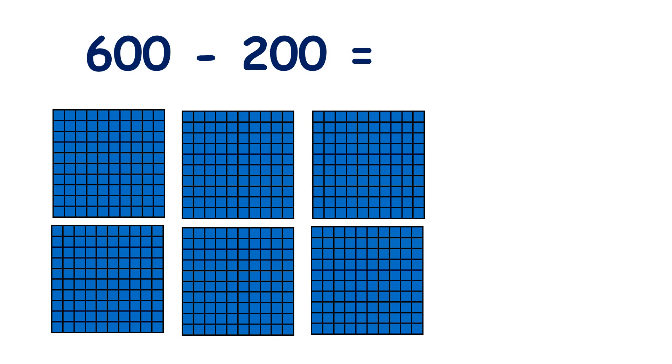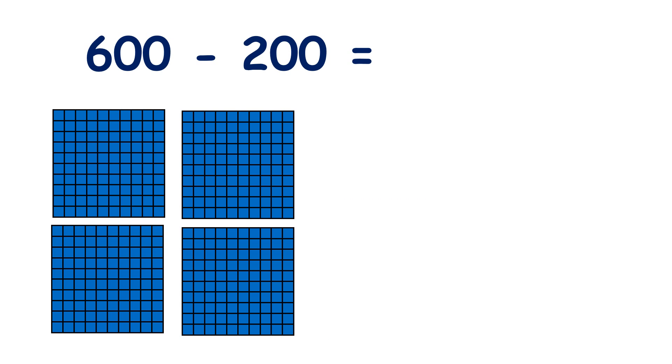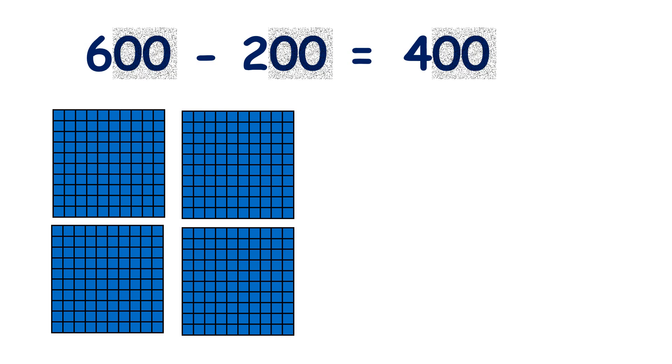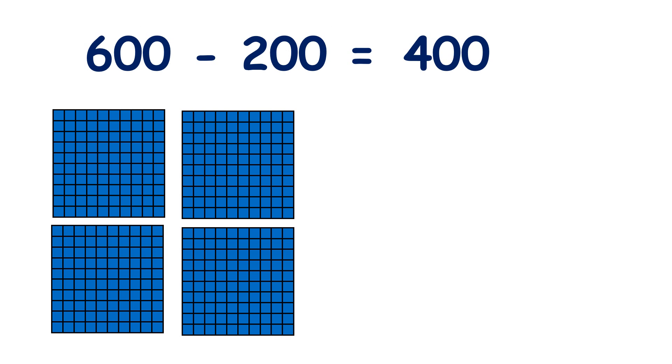So what is 600 minus 200? If we take away 200, that leaves us with 400. And because we know that 6 minus 2 is 4, we know that 600 minus 200 is 400.